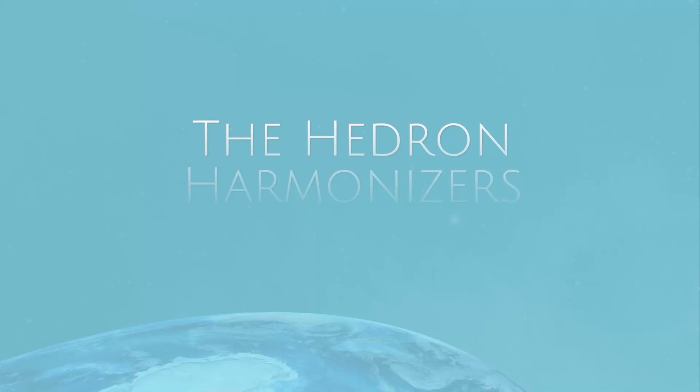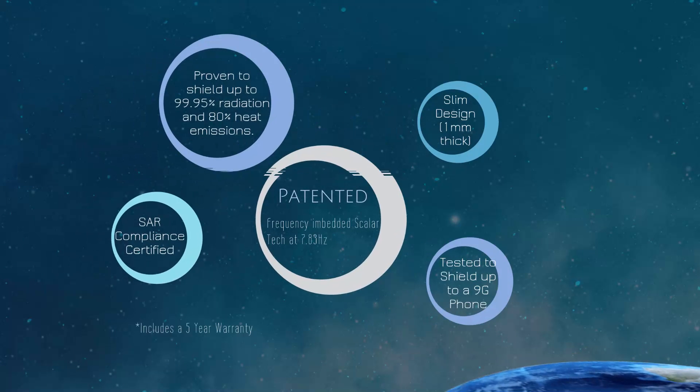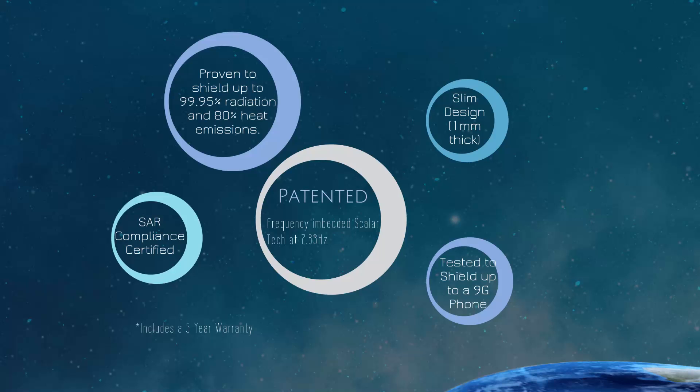The Schumann wave, the 7.83 frequency is only an enhancement of this scalar energy. These are some of the features of our Harmonizer. The California Institute of Electronics Mechanics Sciences showed that it shielded up to 99.95% radiation. It's also proven to decrease heat emission by 80%, which is fantastic because I knew that my cellular devices would heat up like crazy if I don't have this on it. And then also, yes, like I said, the scalar technology and the Schumann resonance that we impregnated into the device as well.